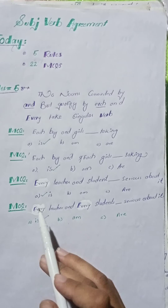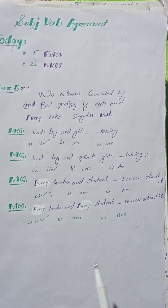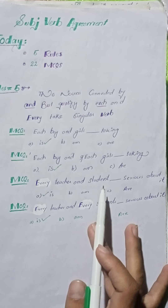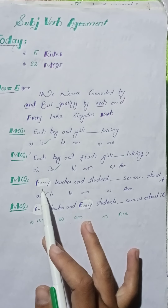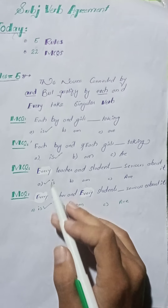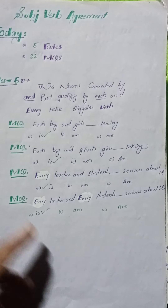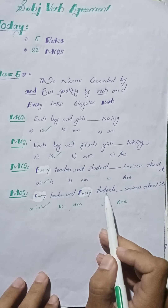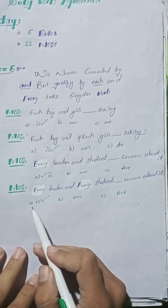MCQ number three: 'Every teacher and student ___ serious about it.' یہاں teacher اور student سے پہلے 'every' آیا ہے تو singular verb 'is' use ہوگی۔ Right option: option A. MCQ number four: 'Every teacher and every student ___ serious about it.' دونوں nouns کے ساتھ 'every' آیا ہے، right option پھر بھی 'is' ہوگا۔